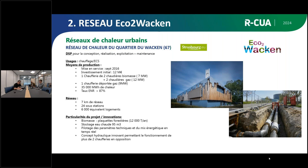Initialement, on vise 35 gigawattheures de chaleur avec un taux d'énergie renouvelable garanti de 87 % auprès de la collectivité. Le réseau faisait 7 kilomètres — tous ces chiffres ont doublé en 8 ans grâce au développement du réseau et à l'import d'énergie fatale depuis le port autonome. On est passé de 24 sous-stations à 48. On a aussi testé des concepts innovants : deux chaufferies distantes de 6-7 kilomètres fonctionnant simultanément grâce à une intelligence de pilotage et de régulation poussée.